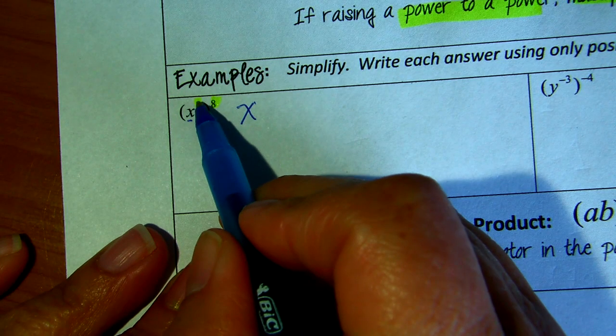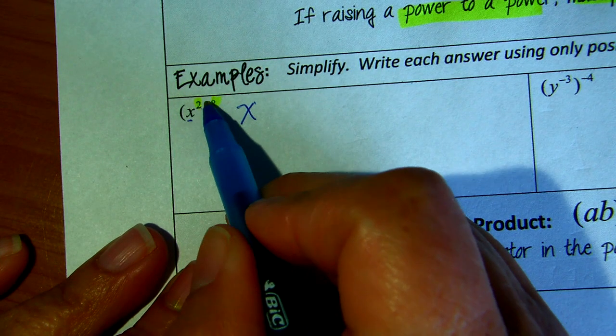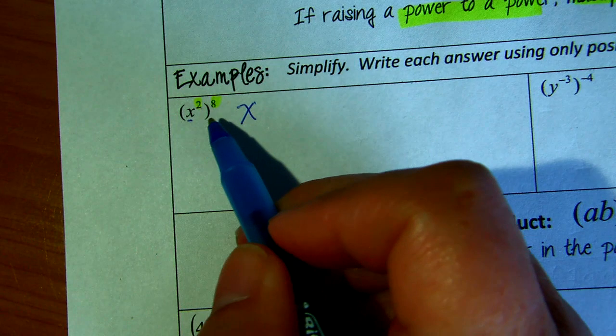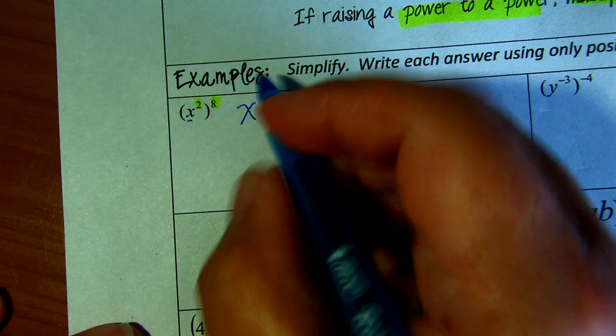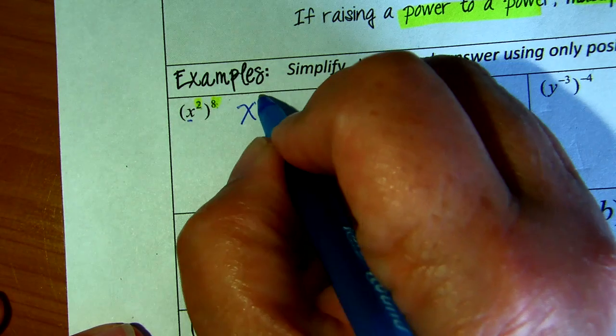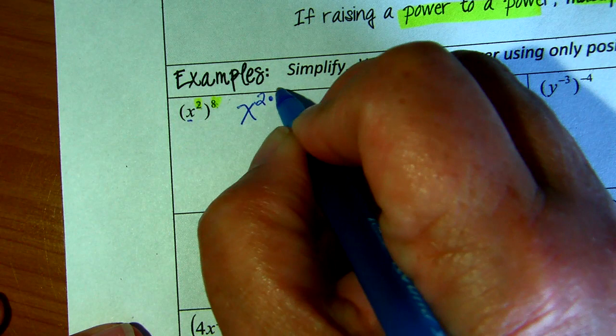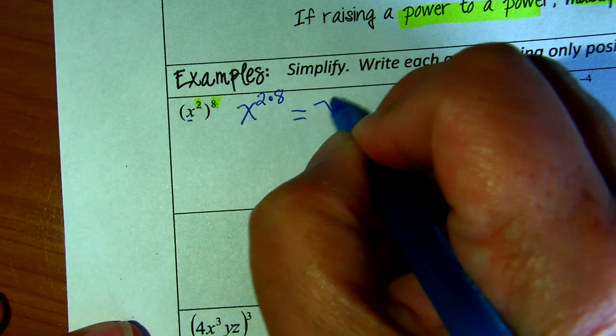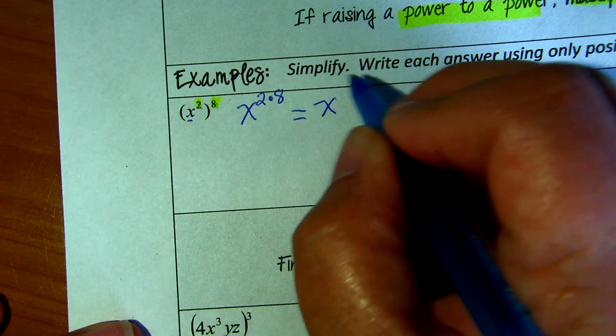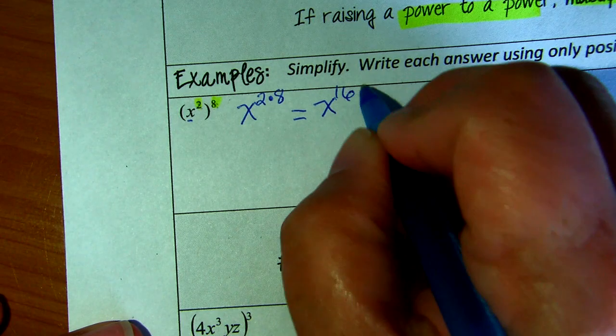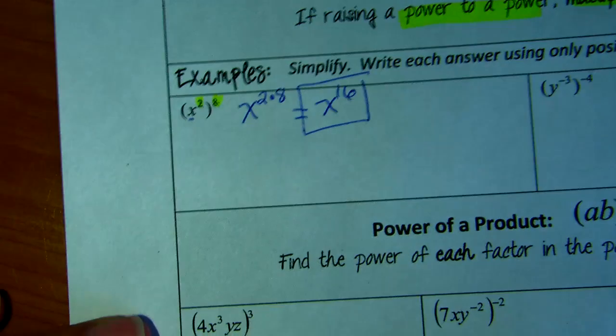This is a number that is raised to a power and then again raised to another power. So what do we do with the two exponents? We multiply them. So this gives you x to the power of 2 times 8, 16. This is your answer.